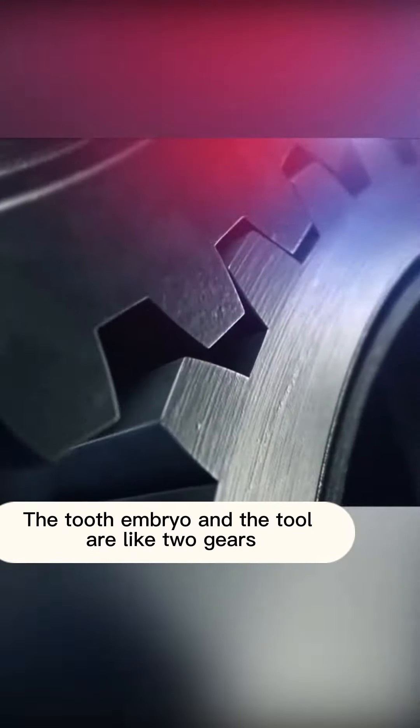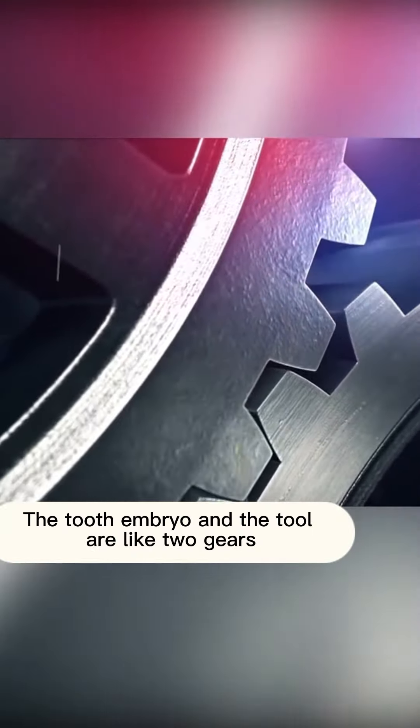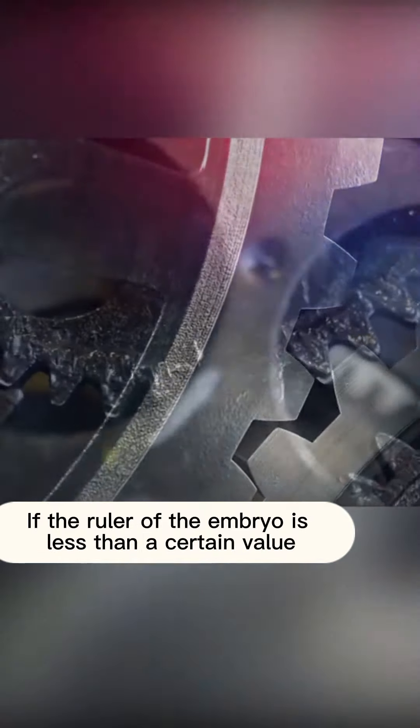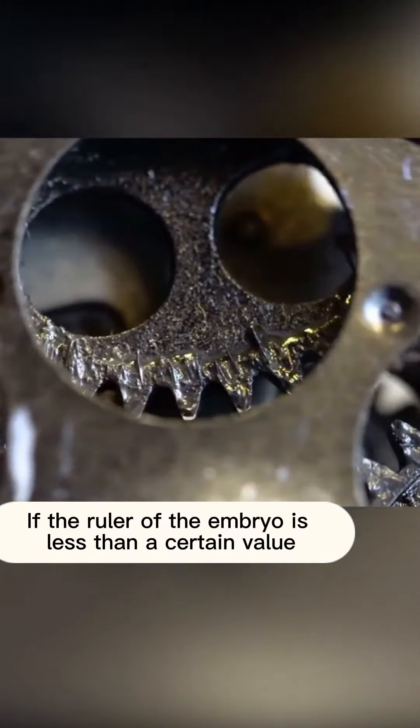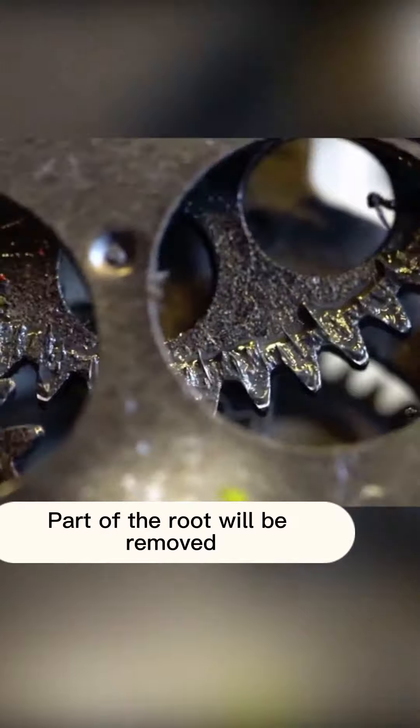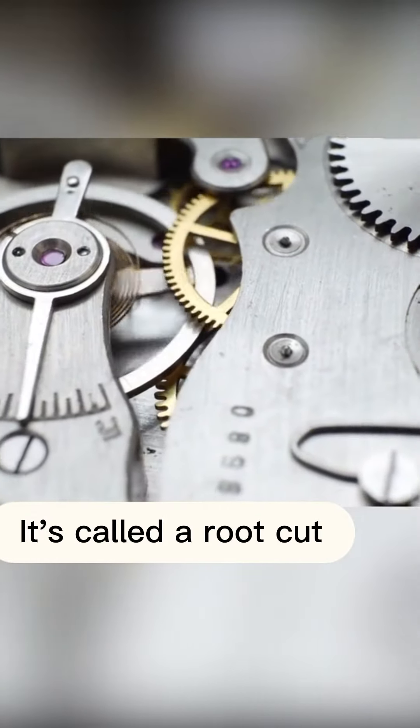Gear working, the tooth cutter and the tooth work like two gears. If the number of teeth is less than a certain value, part of the root will be removed, it's called a root cut.